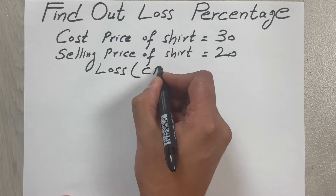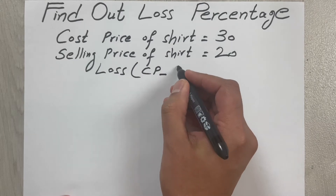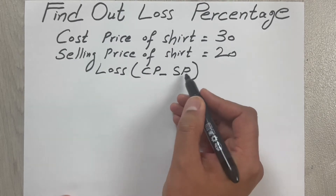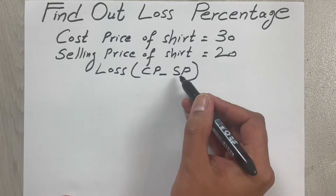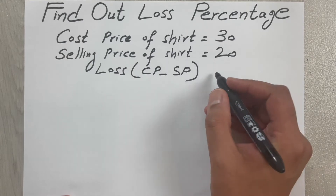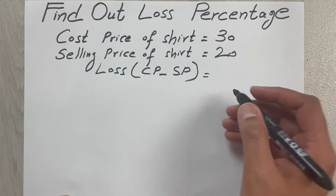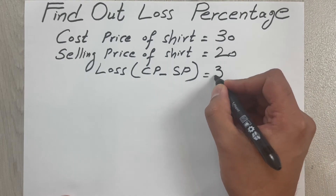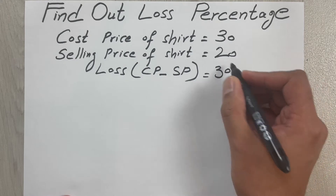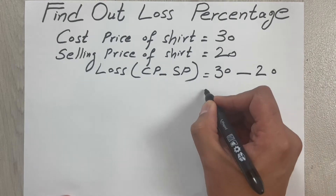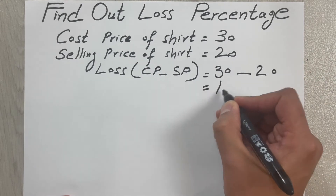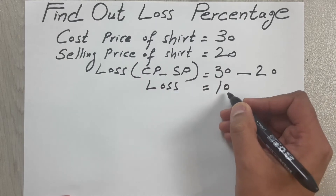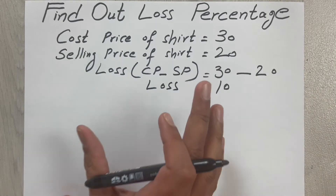So: CP minus SP. When we put the values, CP is 30 and selling price is 20, so 30 minus 20 equals 10. Here we made a loss of 10 rupees or 10 dollars. This is the first deal.